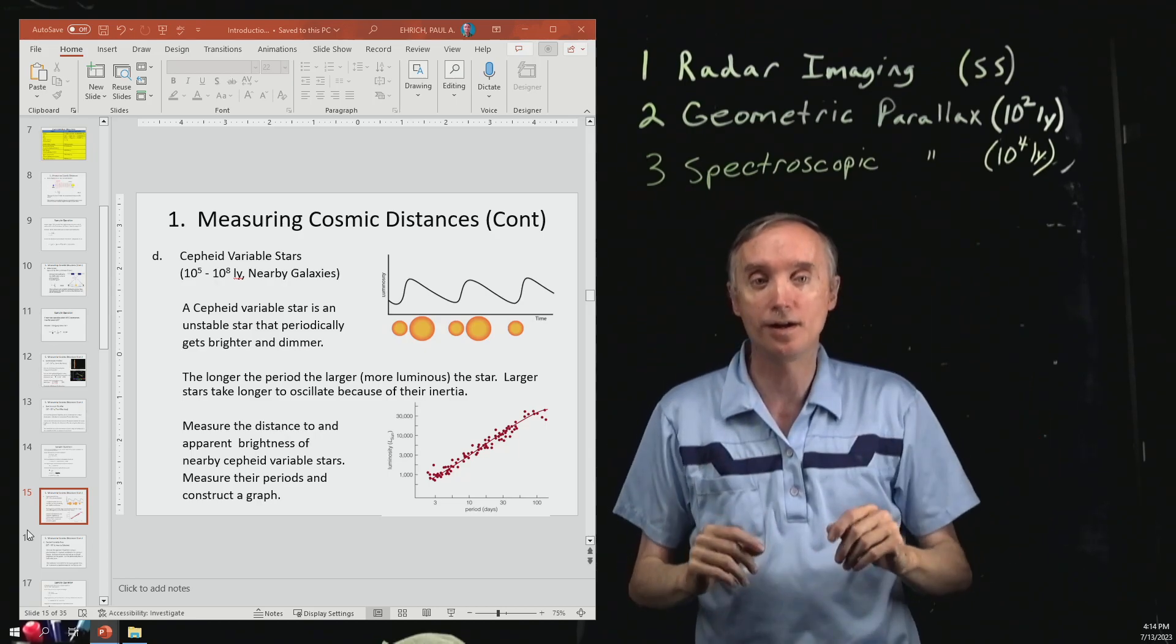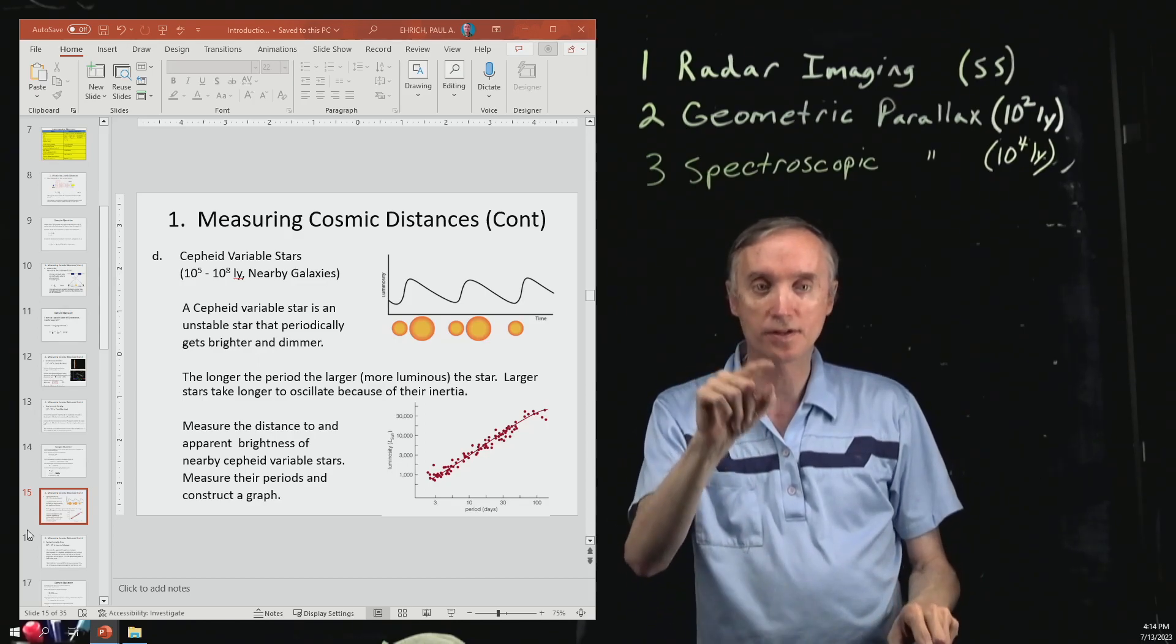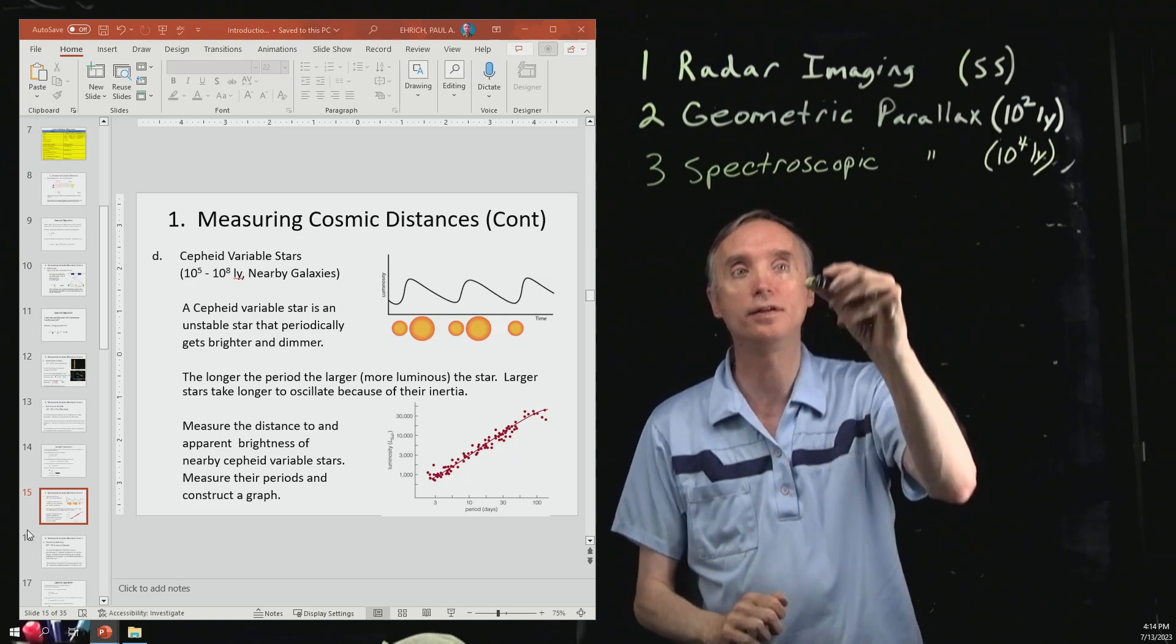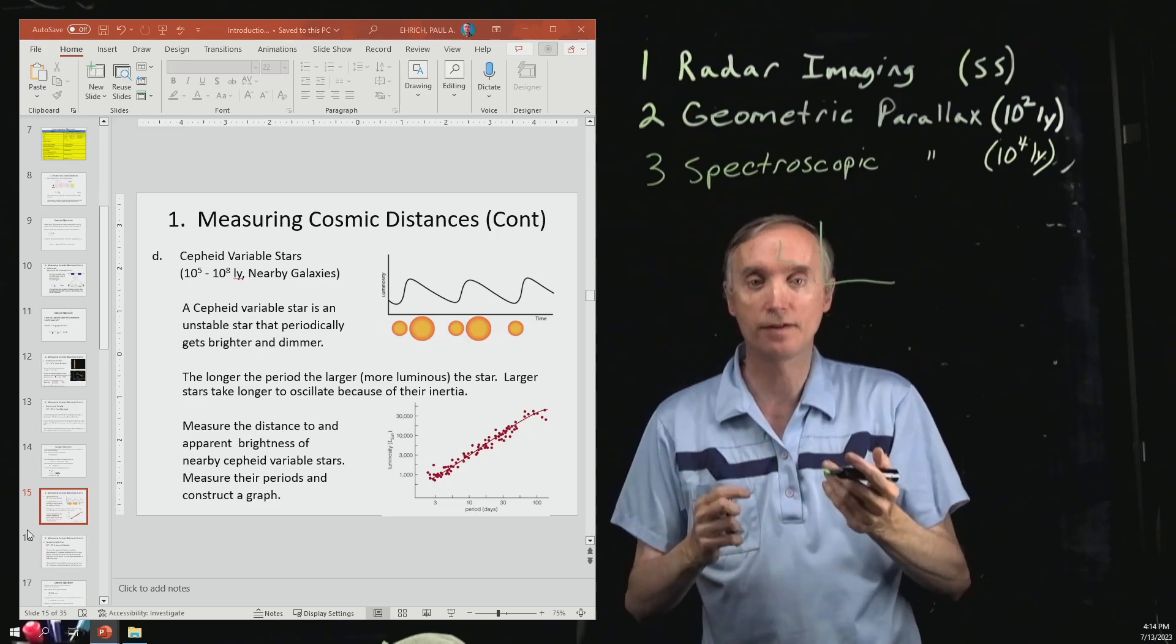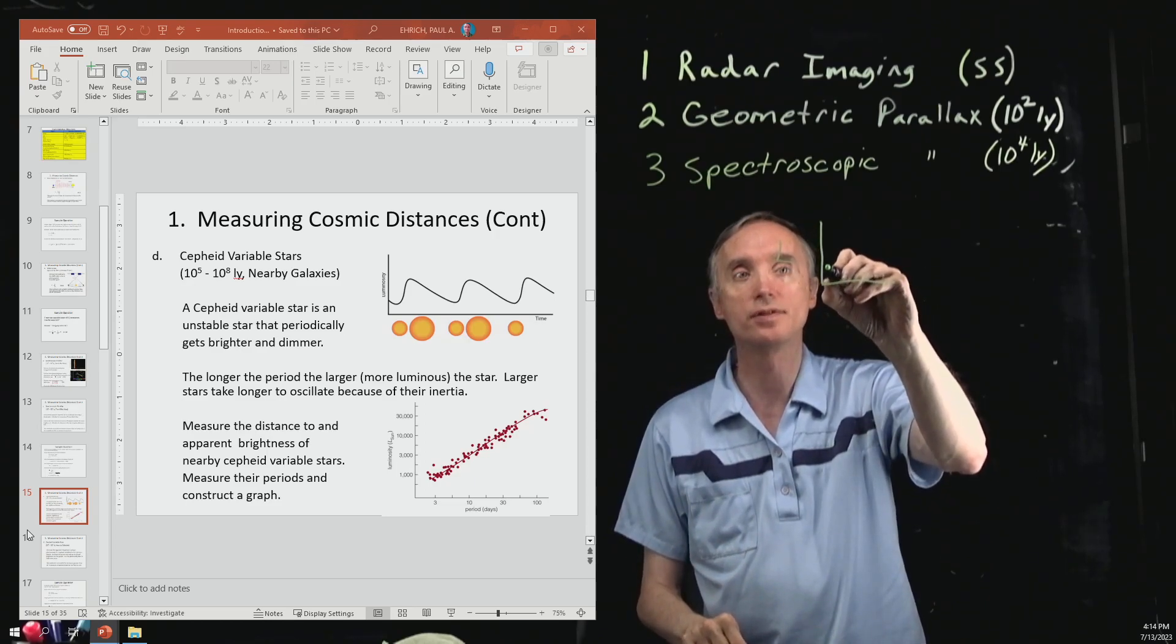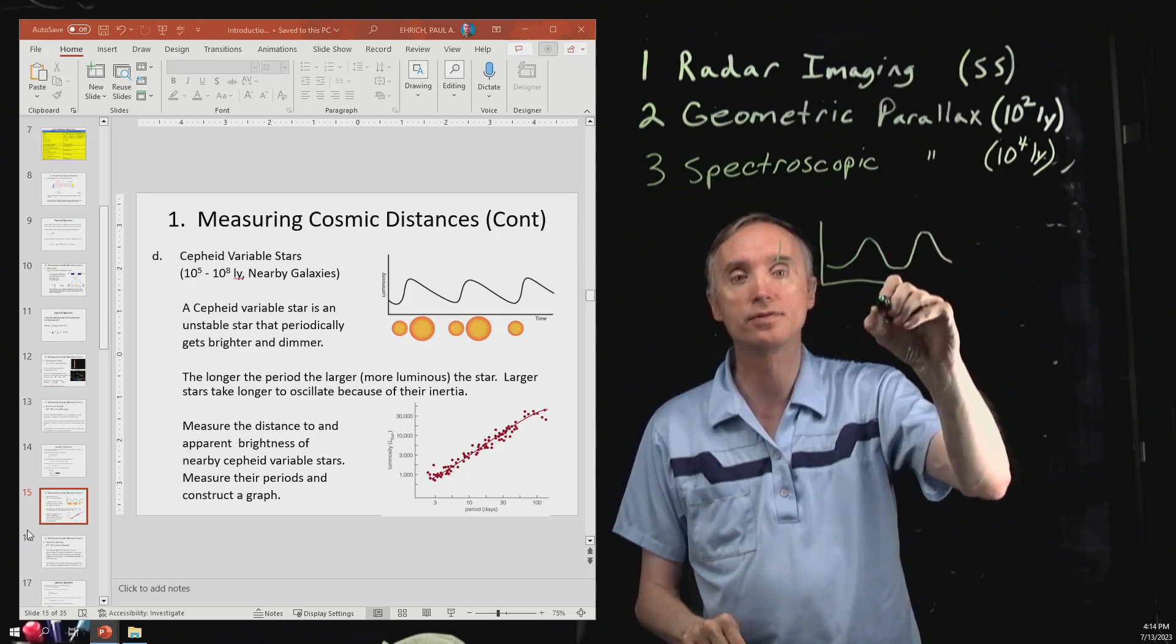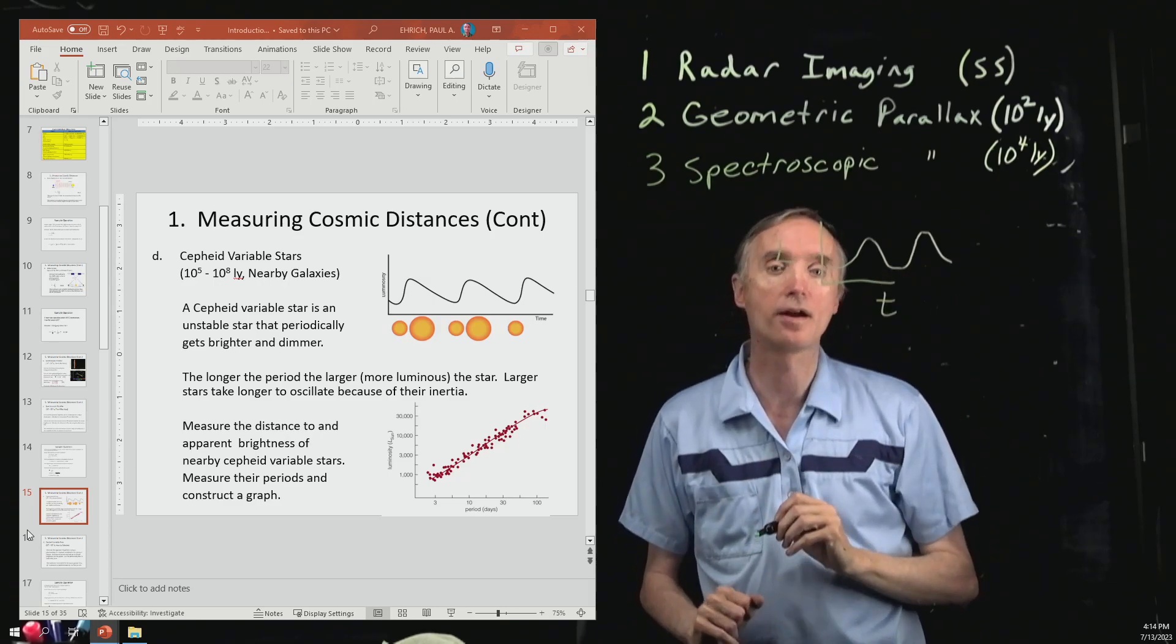And so therefore it oscillates in brightness. The top picture is a graph of the luminosity L of one of these Cepheid variable stars. And as you can see, sometimes it's dim and sometimes it's bright. Time is going sideways on that graph.